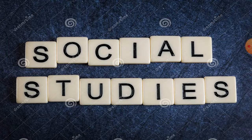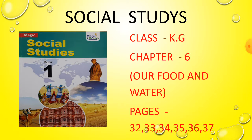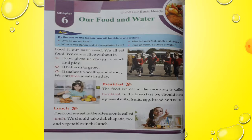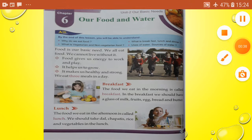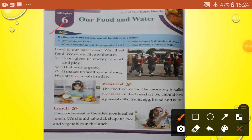Good morning children, today we are going to study social studies. Chapter 6: Our Food and Water, pages 32 to 37. We will be doing revision of social studies chapter 6. By the end of this lesson, you will be able to understand why we eat food, what is breakfast, lunch and dinner, what is vegetarian and non-vegetarian food, uses of water, and sources of water.